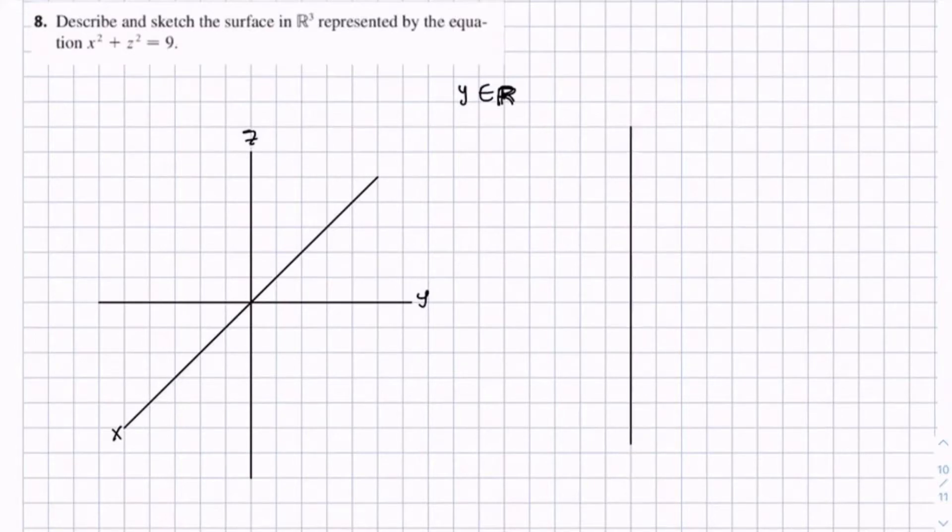If we just look at the x-z plane and plot this, we would get a circle with radius 3. Because remember, on the x-y plane, it's x squared plus y squared equals r squared. It's basically the same thing. We have x squared plus z squared equals r squared with r being 3. So we get this circle with radius 3.